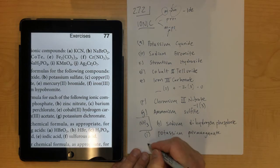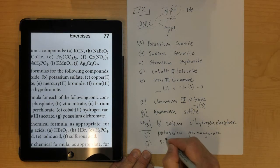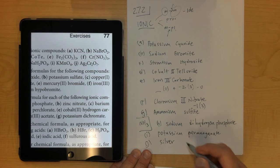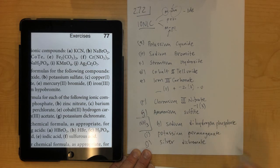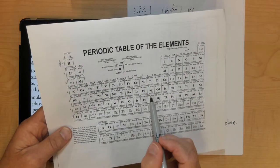And then lastly, letter J is silver, and then Cr2O7 is a dichromate, that's the polyatomic ion, and you notice that silver is not in group 1 or group 2.